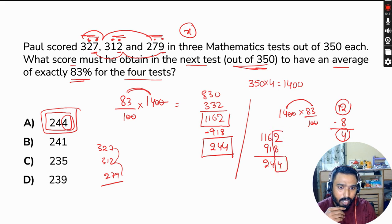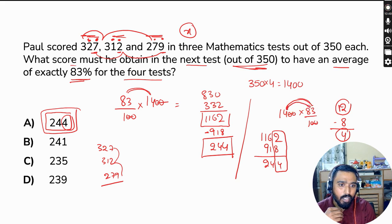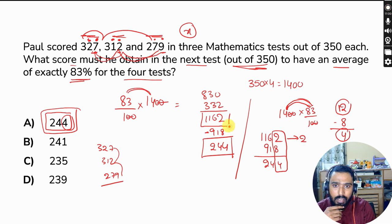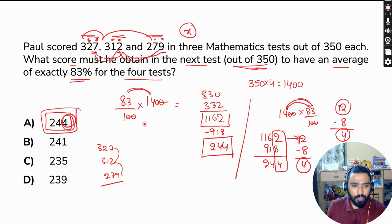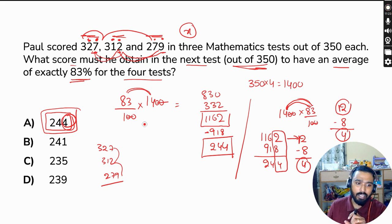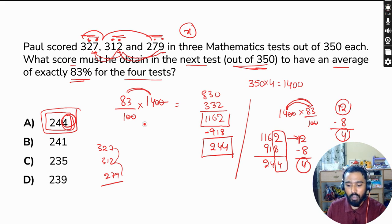There's another method using unit digits. 83% of 1400: the unit digit of 83 × 14 — since 4 × 3 = 12, the unit digit of the total should be 2. The unit digits of the existing scores are 7, 2, and 9. Adding: 7 + 2 = 9, 9 + 9 = 18, unit digit 8. Subtracting from unit digit 2: 12 − 8 = 4, so the answer must end in 4. That confirms 244. Most questions can be solved very quickly if we think about technique, not just getting the answer. We'll do more questions in the next session.